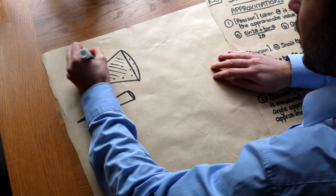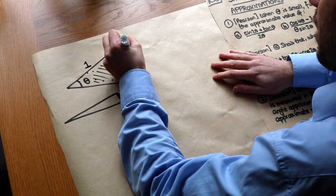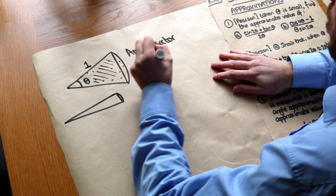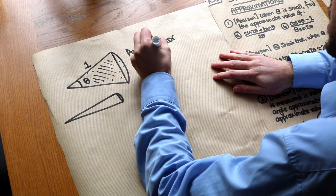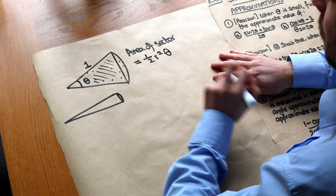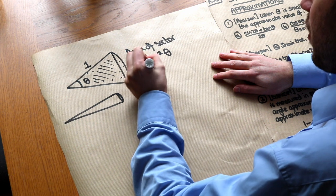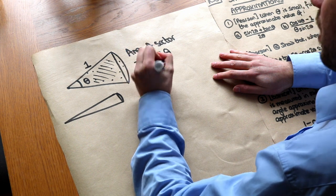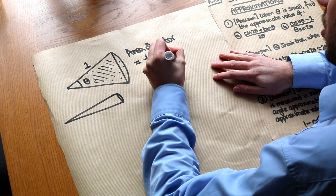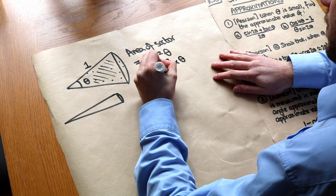I'm going to make the radius one, just for simplicity. The area of the sector is — using the formula ½r²θ, which is the area of a sector when theta is in radians — in this case it'll be ½ times one squared times theta. So we just get ½θ.